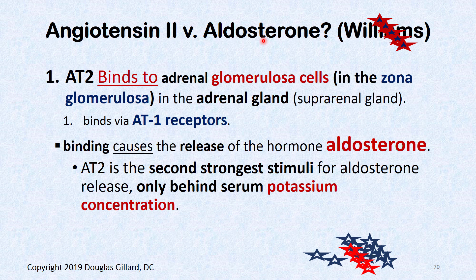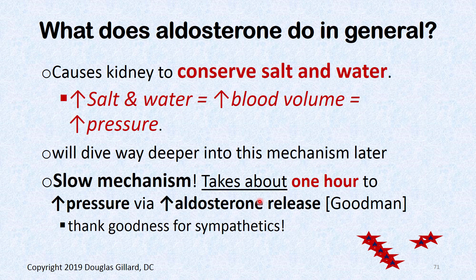Angiotensin II versus aldosterone. Angiotensin II binds to the adrenal glomerulosa cells in the zona glomerulosa and stimulates them to produce aldosterone. Specifically, it binds to AT1 receptors, and that binding causes the release of aldosterone. A fun fact: angiotensin II is the second strongest stimulus for aldosterone release — the serum concentration of potassium is stronger and is the champion.